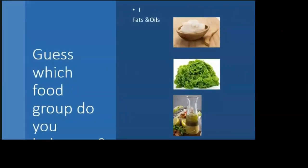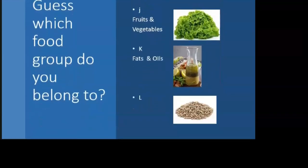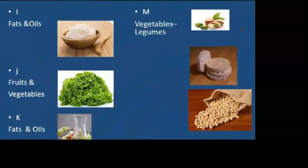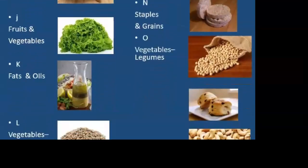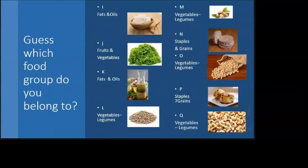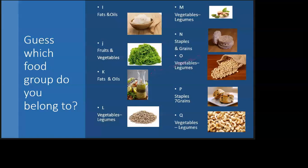I is fats and oils. J is fruits and vegetables. K is fats and oils. L is vegetables, which fall under legumes. M is vegetables and legumes. N is staples and grains. O is vegetables and legumes. P is staples and grains. Q is vegetables and legumes. M is pistachio nuts, as some people may not be familiar with that. N is actually rice cakes, and K is your vinaigrettes — these would be some pictures that might have been a little unknown to you.